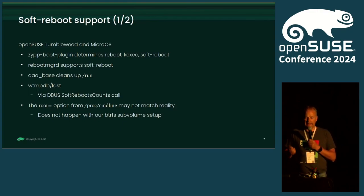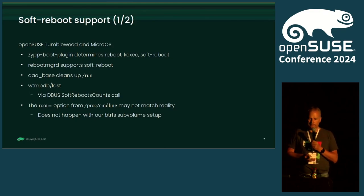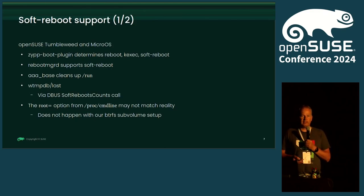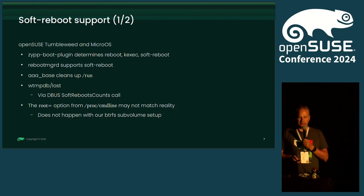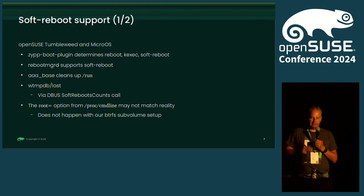Our base package cleans up /run on enhancement. Our wtmp replacement now also tracks whether it was a soft reboot or a hard reboot. For this we use the dbus call soft-reboot-count — if that is zero, it was a hard reboot; if it is increasing, a soft reboot was done. So if you type 'last', you will see when it was a soft reboot and when it was a hard reboot.